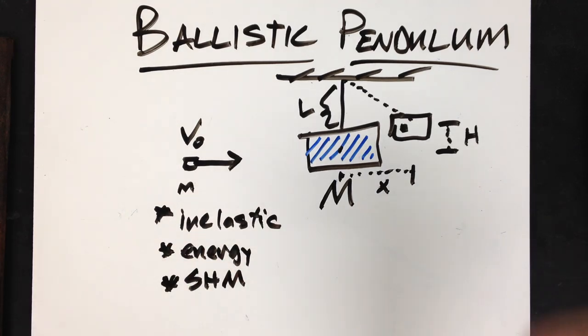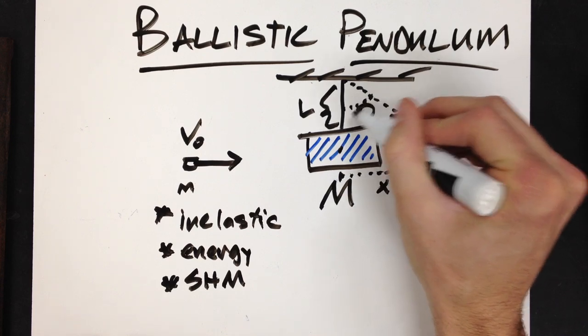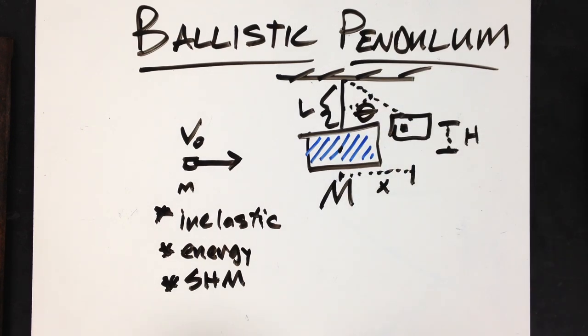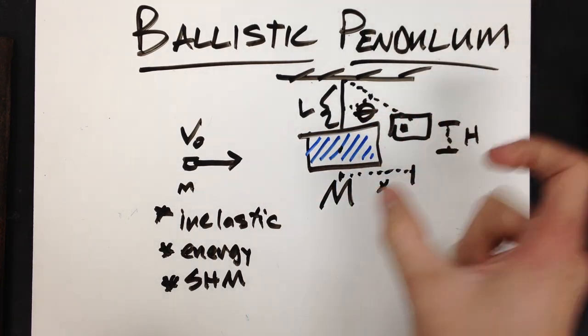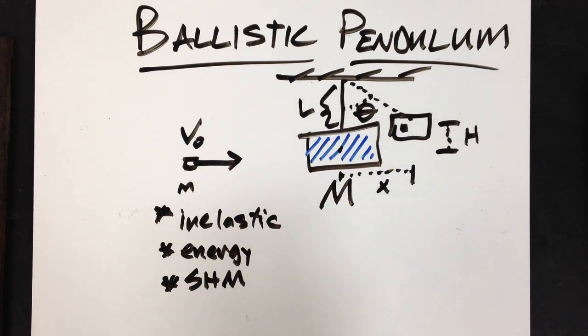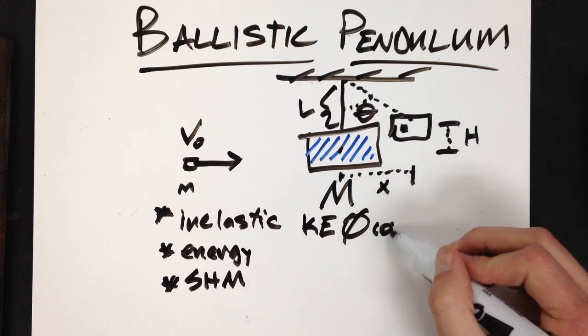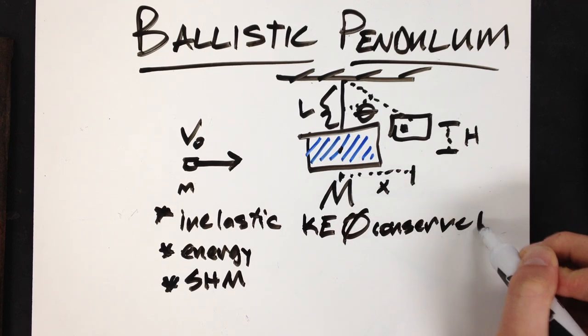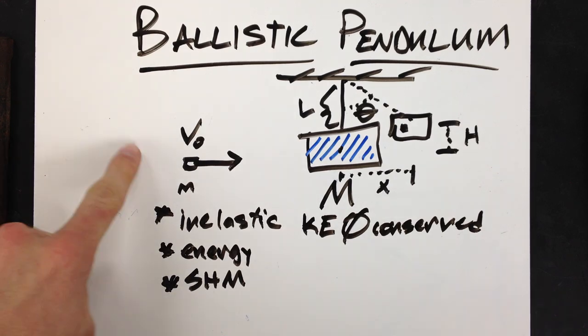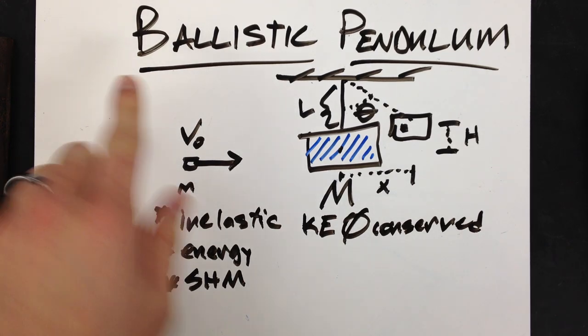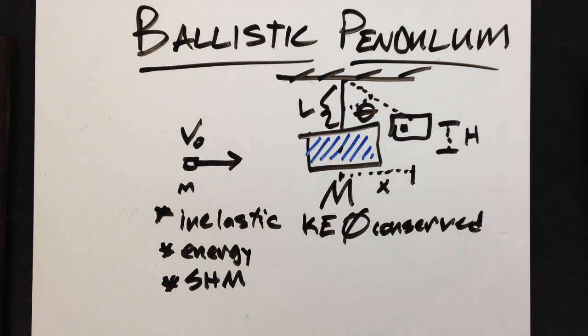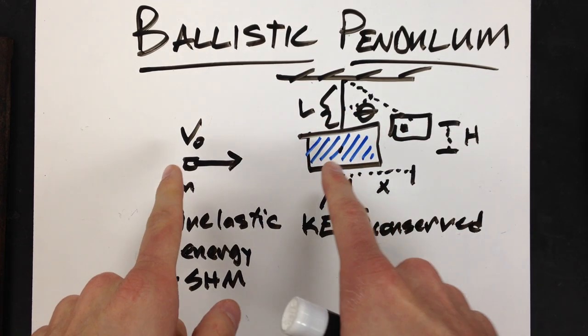So, let's say that this pendulum swings out a certain angle theta. Now, in order for this to swing out, it has to have a certain amount of kinetic energy immediately after the collision. Now, if it's an inelastic collision, that means that kinetic energy is not conserved, which means we can't just say the bullet has a certain amount of kinetic energy that's going to equal my potential energy of the bullet block system. No, because kinetic energy wasn't conserved during the collision.